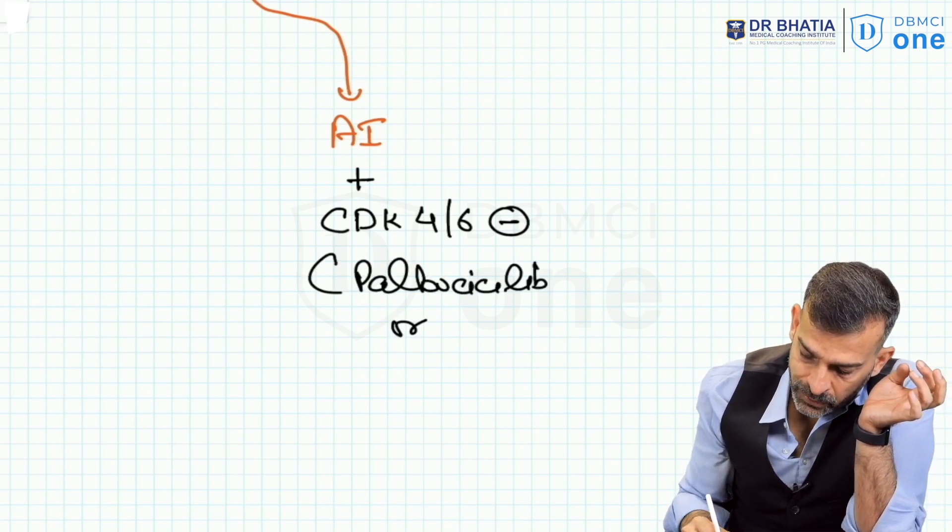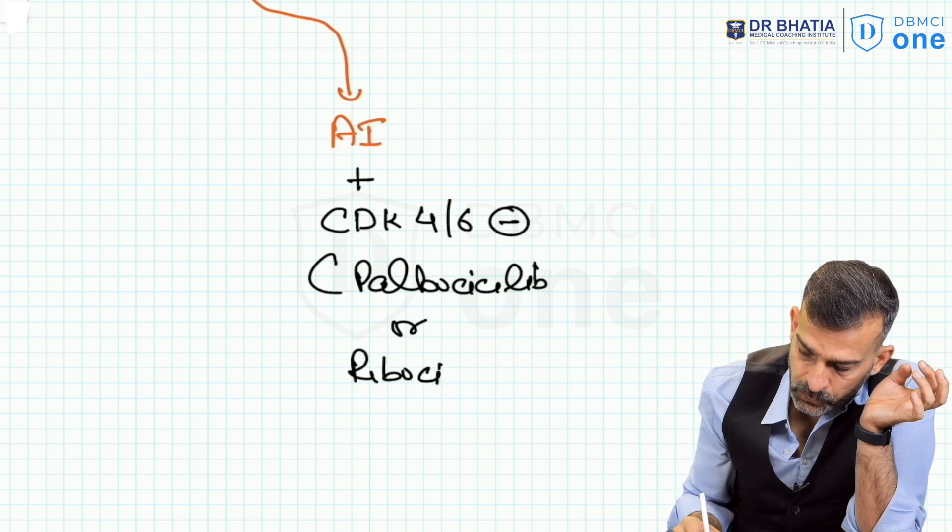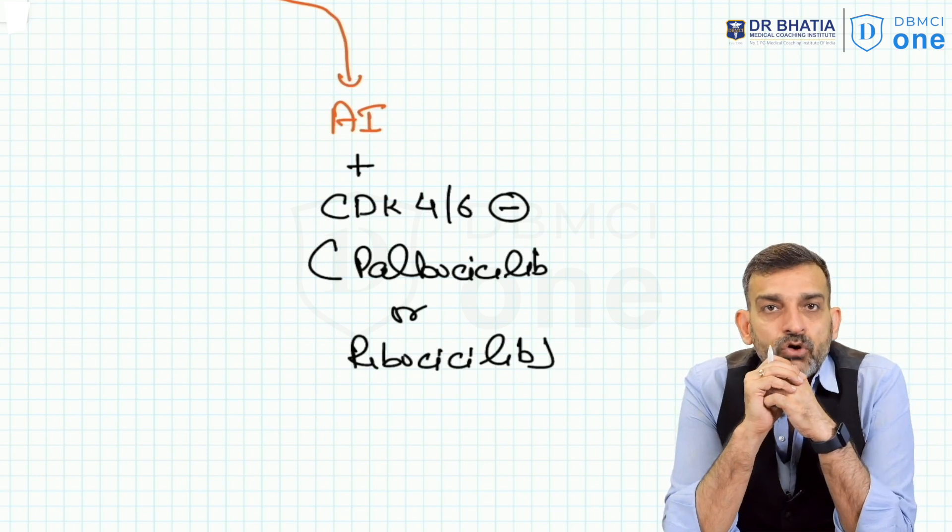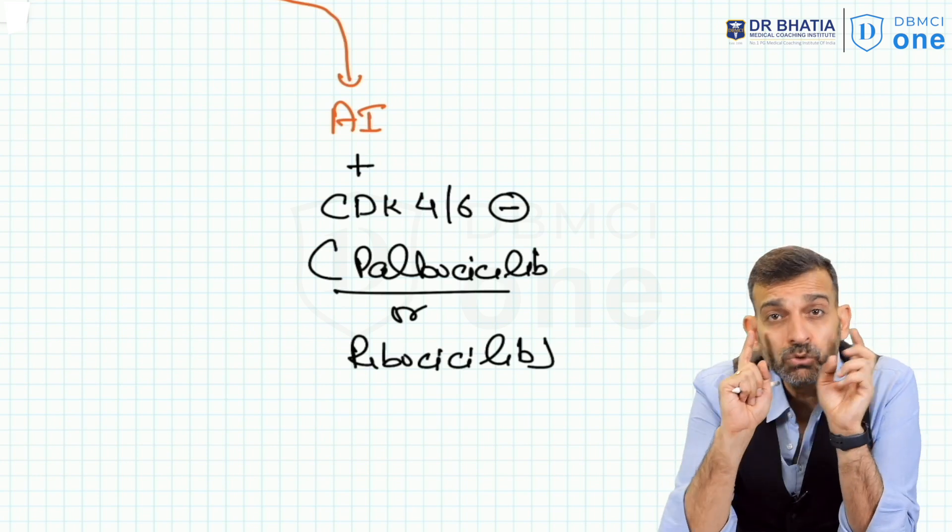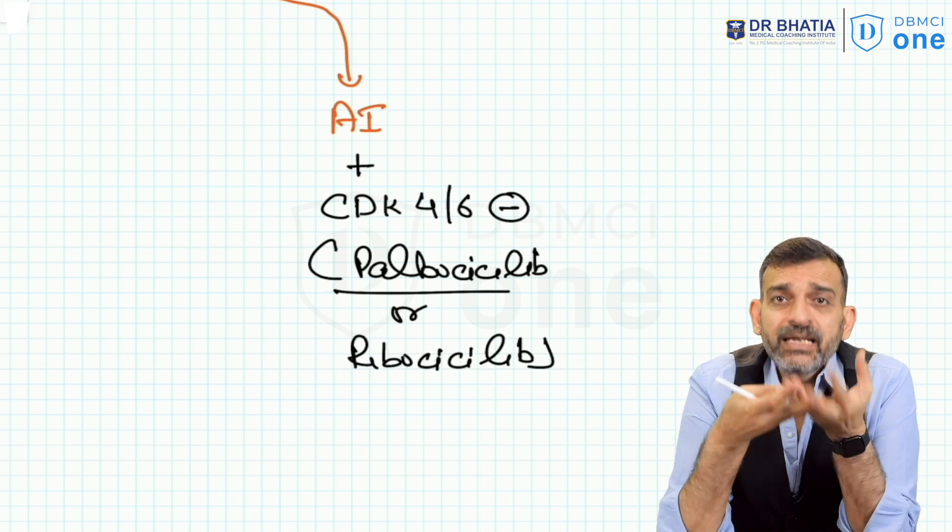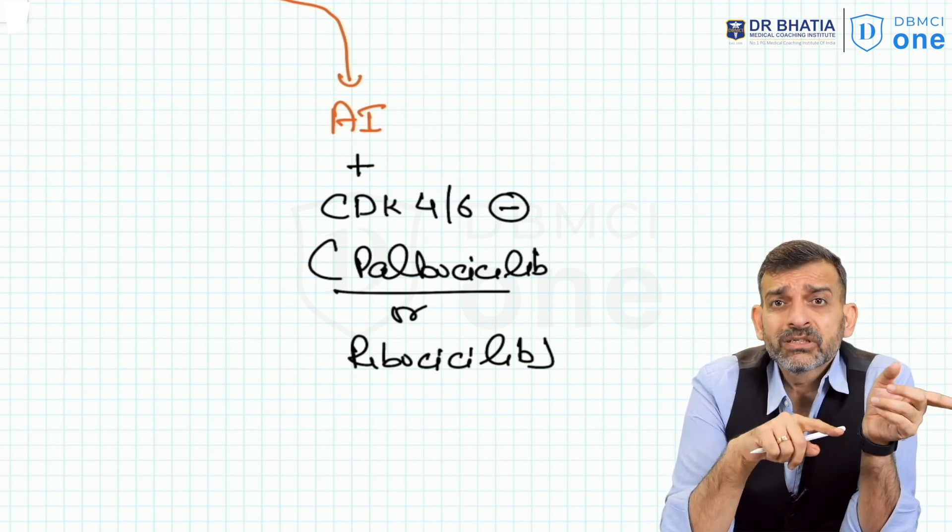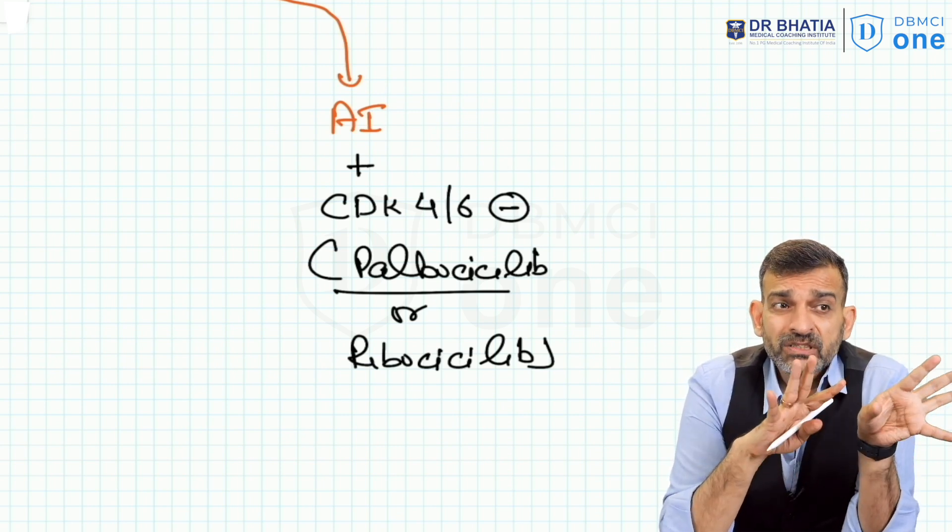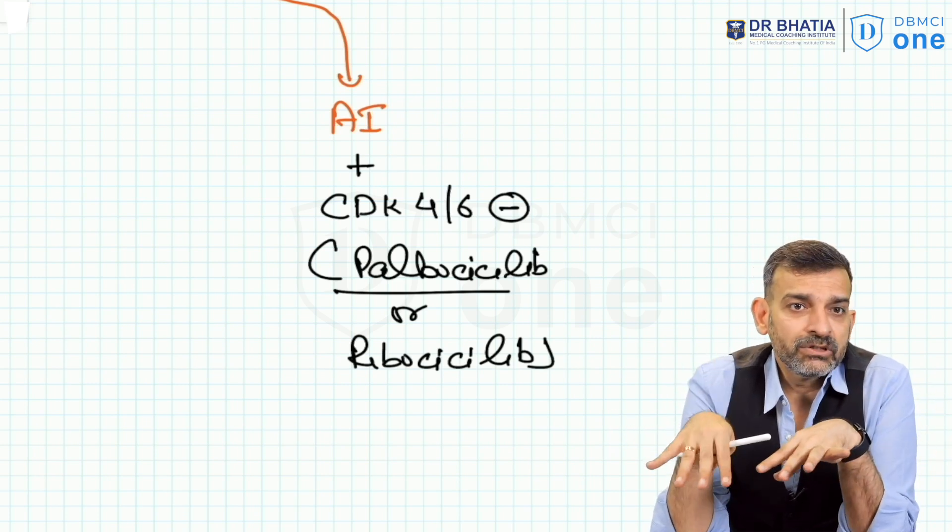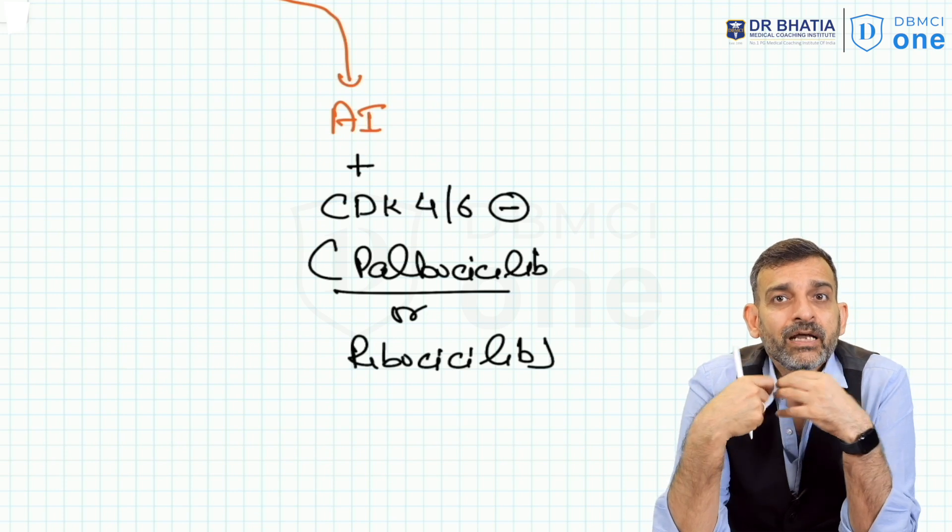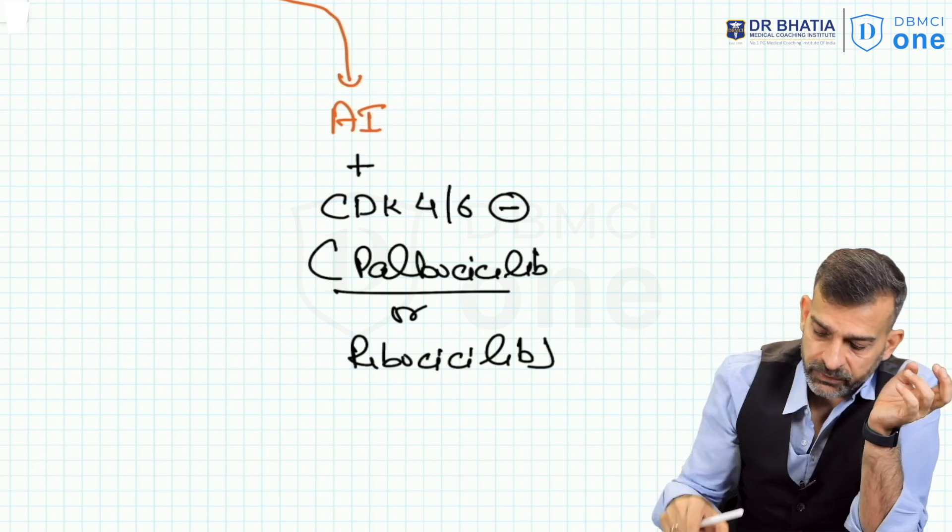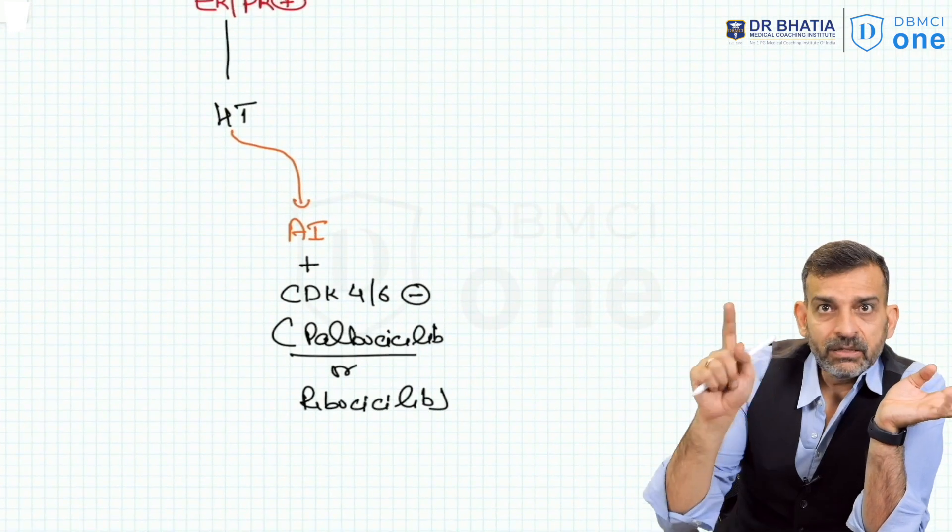Palbociclib or ribociclib, we commonly use palbociclib. But there is no point, the guidelines say, of adding palbociclib with tamoxifen. If you are for some reason giving tamoxifen in hormone therapy, there is no point adding palbociclib. The palbociclib addition with aromatase inhibitor they found probably helps in improving survival.